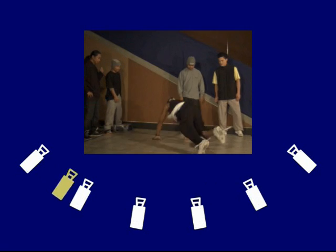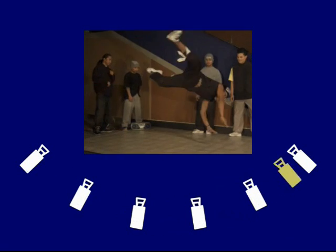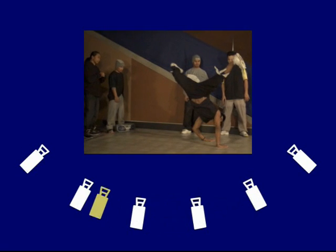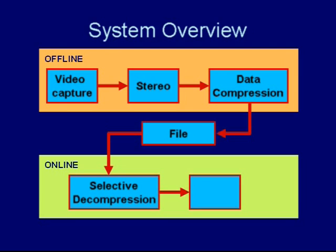Our approach is to render high-quality virtual viewpoints by smoothly interpolating between a small number of captured videos. Our rendering system consists of offline and online components. The video capture and processing are done offline. Video processing consists of stereo computation and data compression. The dynamic scene can then be interactively viewed by selectively decompressing the data file and rendering it from novel viewpoints.